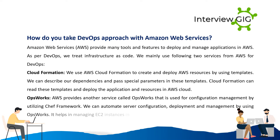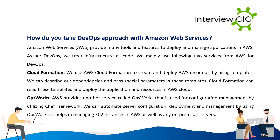Second, OpsWorks: AWS provides a service called OpsWorks that is used for configuration management by utilizing the Chef Framework. We can automate server configuration, deployment, and management by using OpsWorks. It helps in managing EC2 instances in AWS as well as any on-premises servers.